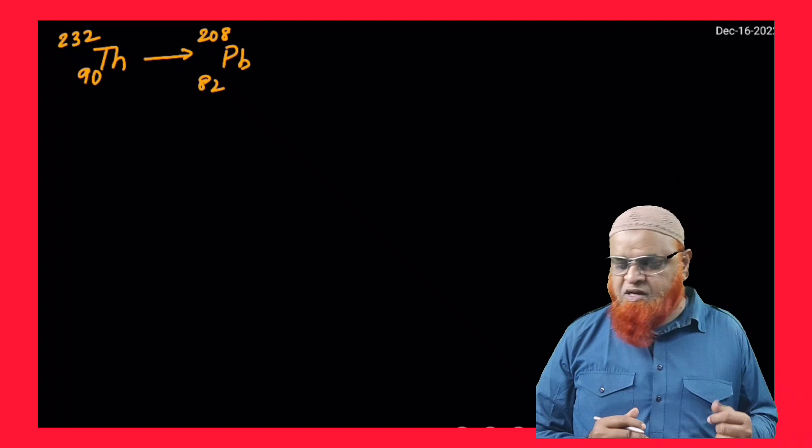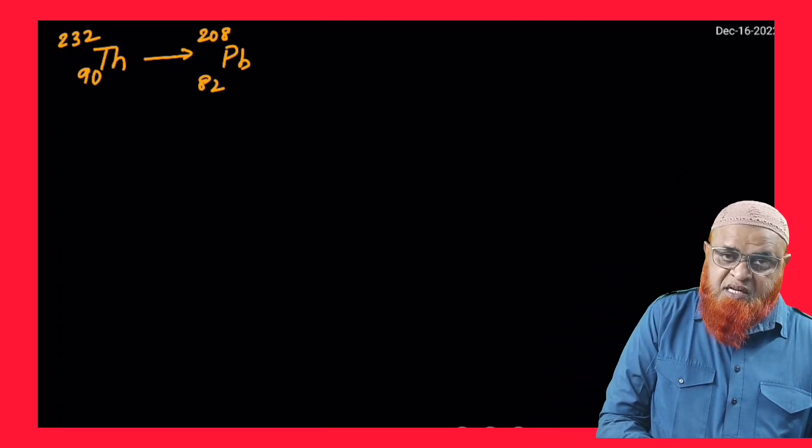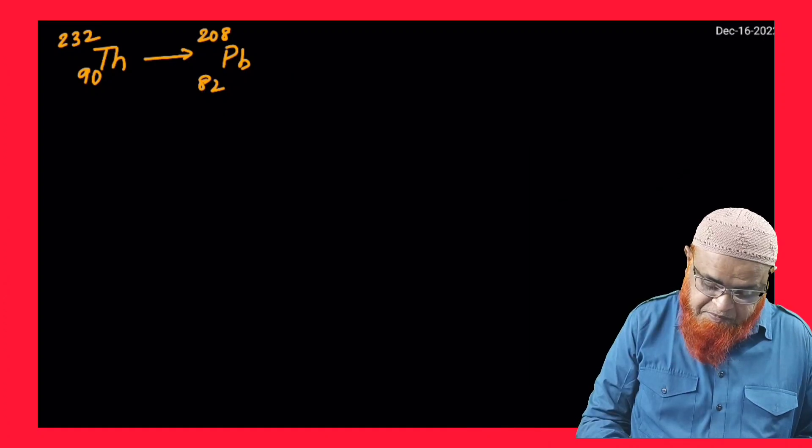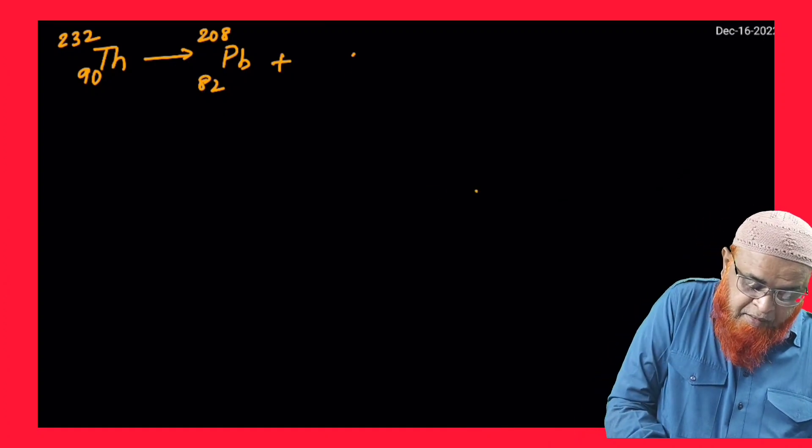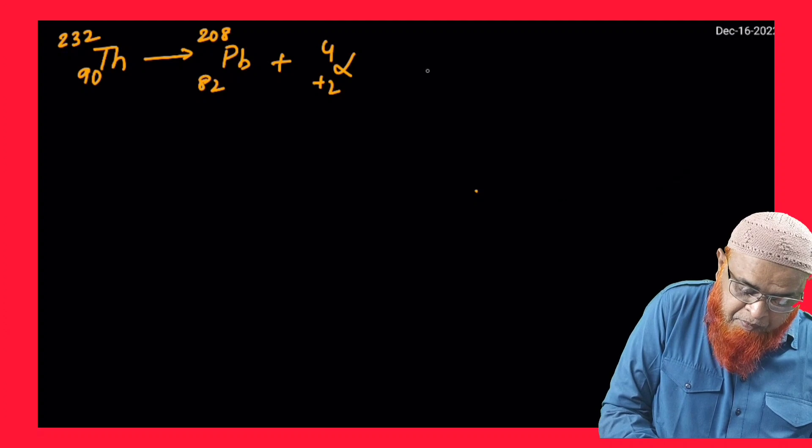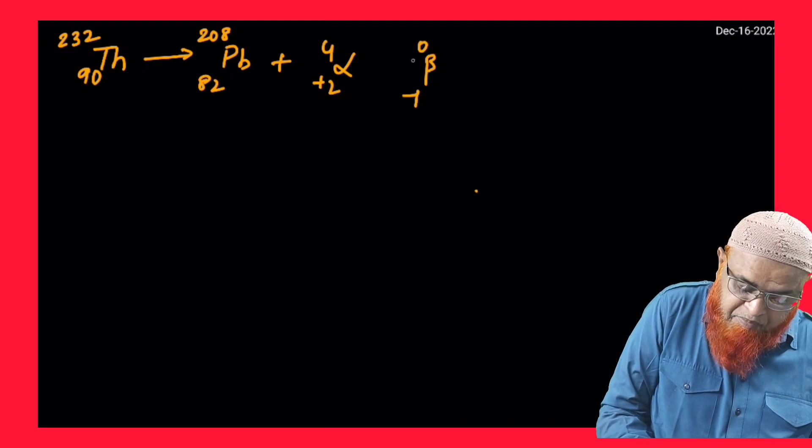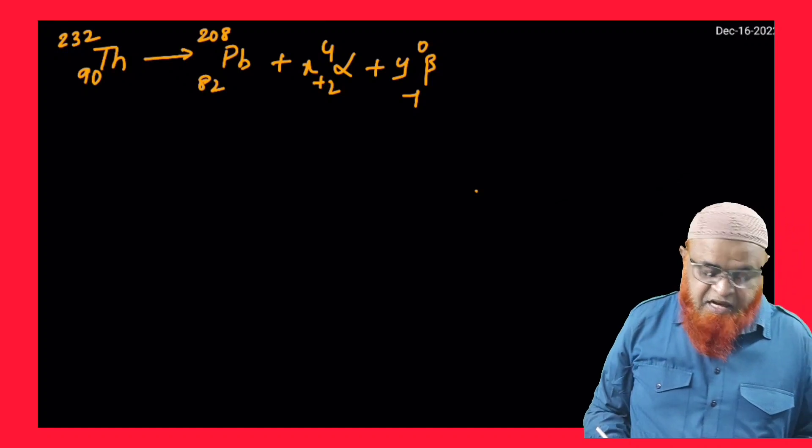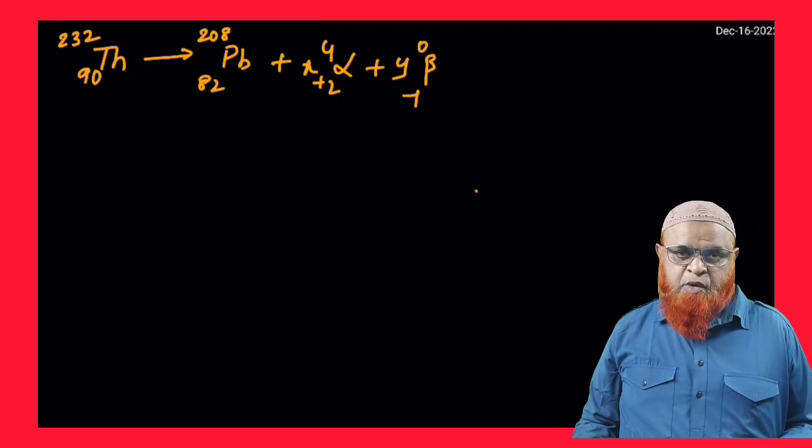For example, thorium converts into lead. If you add some more terms like this, you'll be getting alpha (2,4) and beta (−1,0). Let it be x and this is y. So if you add these two terms in this equation, you can solve in a very easy manner.